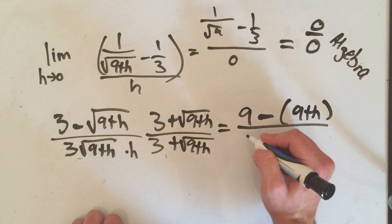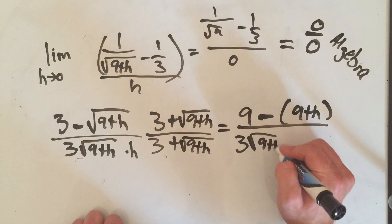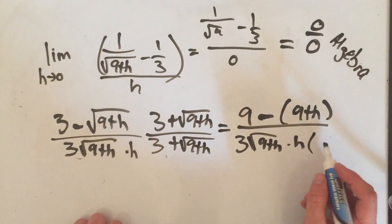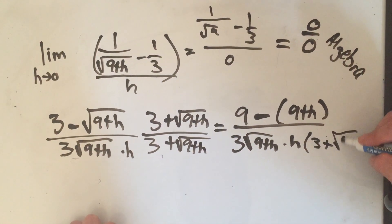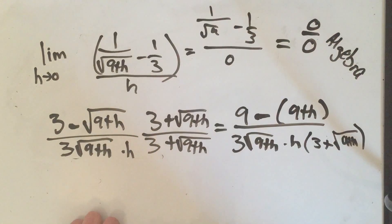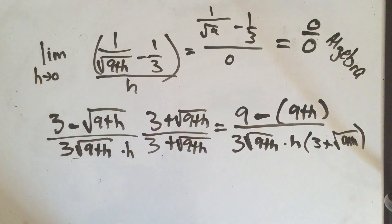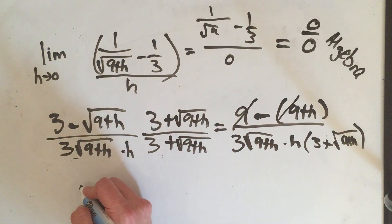On the bottom this is all just going to get mashed together. 3 times square root of 9 plus h times h times this whole quantity 3 plus square root of 9 plus h. Sorry we're getting messy. But on the top I get 9 minus 9, cancels, and I get a minus h on top.